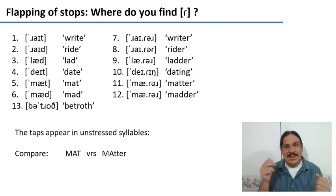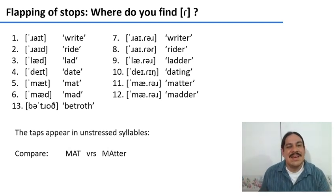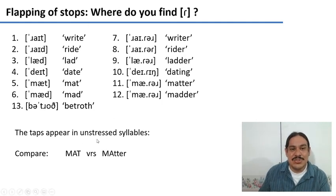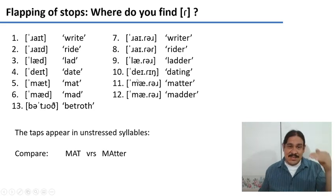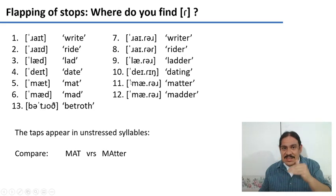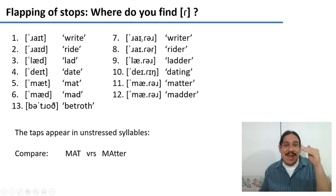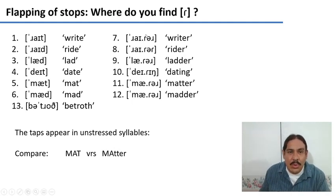Where do we find the tap? The taps appear in unstressed syllables. We have syllables like 'mat,' where we see the full stop. However, in 'matter,' the alveolar sound is in a syllable that does not get stress — it's a trochee, with a strong syllable first and then a weak one. 'Matter.' If you look at all of them — 'rider,' 'ladder,' 'dating' — all of the taps occur in syllables that are unstressed.